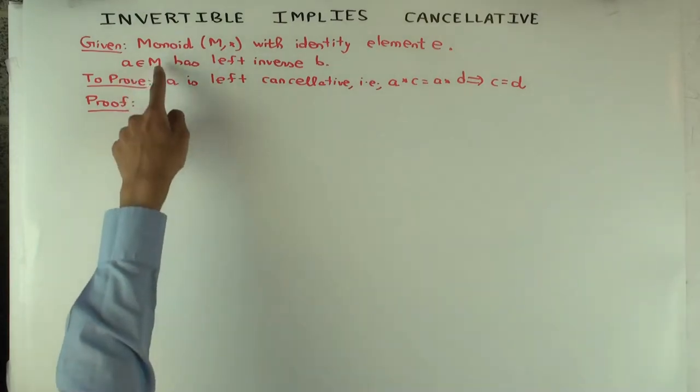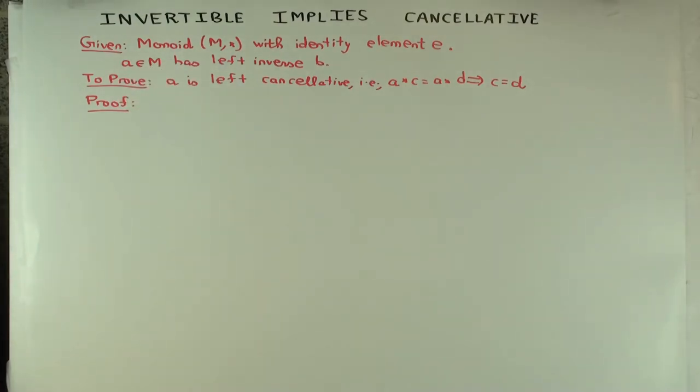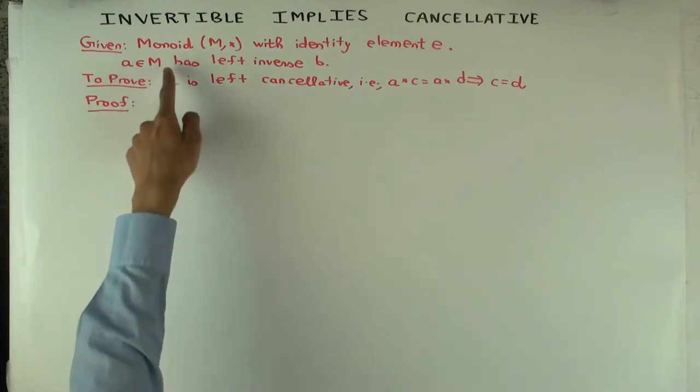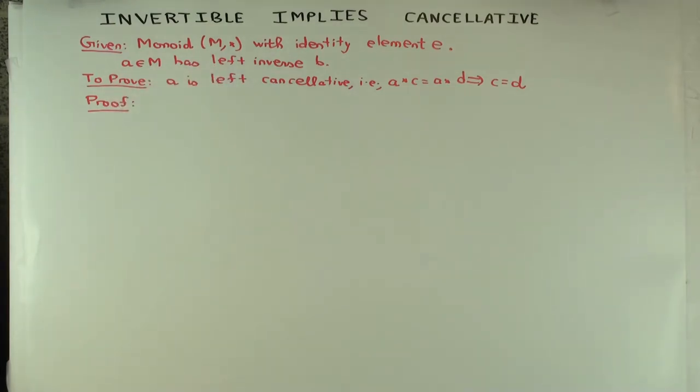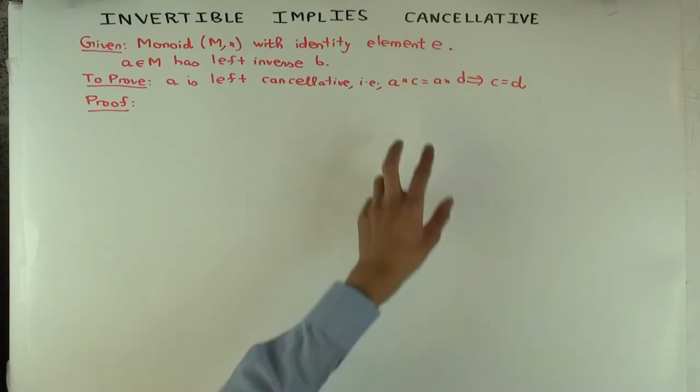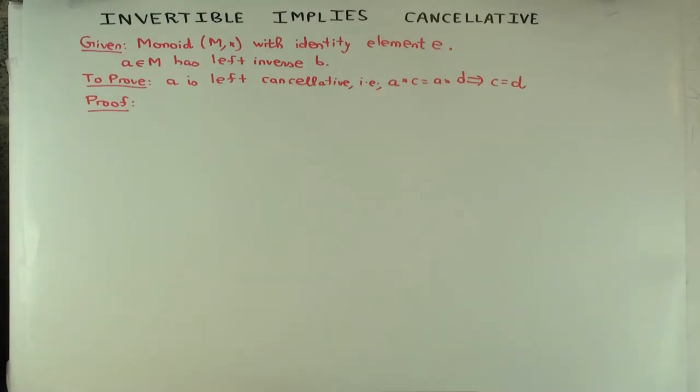So let's say that you have an element in the monoid which is left invertible. So you have an element A in the monoid which has a left inverse B. And now I want to show that A is left cancellative. What do I mean by that? I mean that if I have A times C equals A times D, I can cancel A and get C equals D.